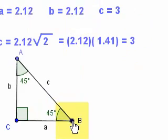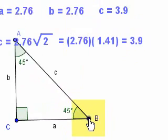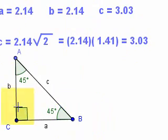And no matter how I do it, no matter how I change the size of this triangle, the side opposite the 90 is always the square root of two times bigger than any of the other two sides, in this case 3.03.